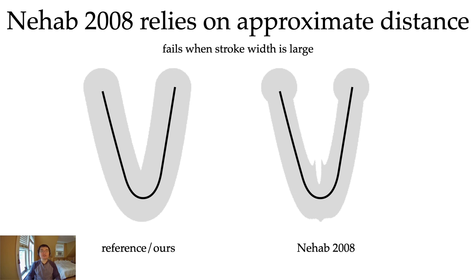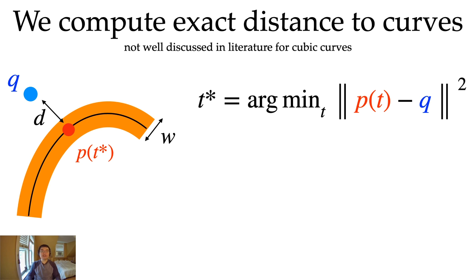For computing the distance d for strokes, Nehab and Hoppe relied on approximating the distance. Unfortunately, this approximation fails when the stroke width is large. This is fine for them because they assume the stroke width is small in practice. However, since we are using this in an optimization, we may want to have large strokes.